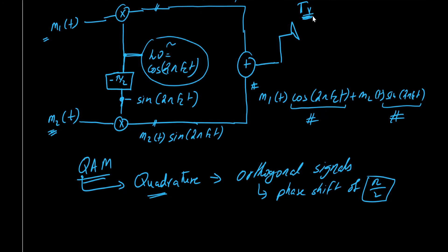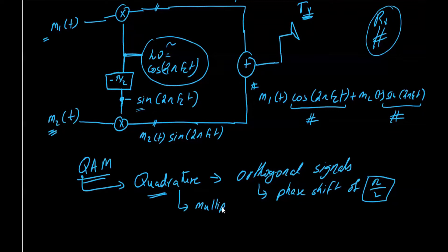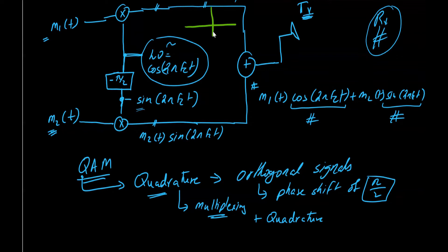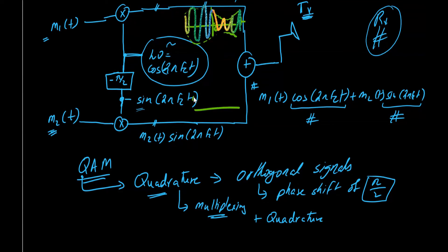This is the transmitted signal. On the receiver side, we receive the signal and need to separate m1(t) and m2(t). We are performing two things: multiplexing and using quadrature components. If we plot waveforms in the time domain, m1(t) is a baseband signal and the cosine carrier is high frequency, so the product would appear as an amplitude-modulated high-frequency waveform.